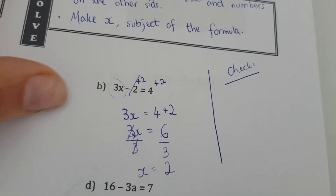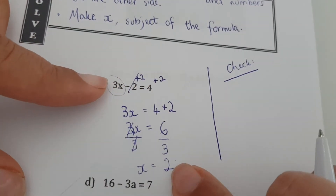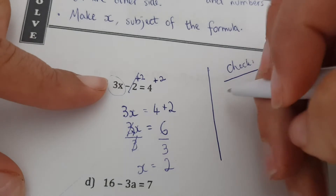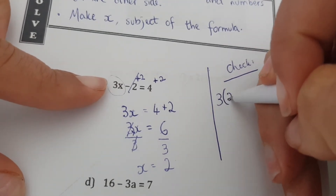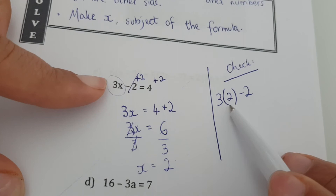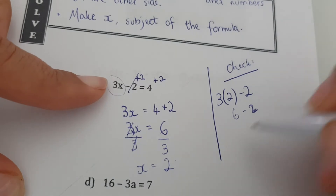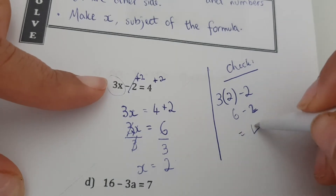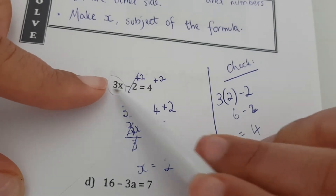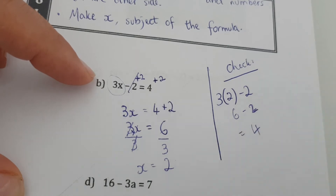You can check your working: three times x is three times two, which is six. Six minus two gives four. So the left hand side equals the right hand side — correct.